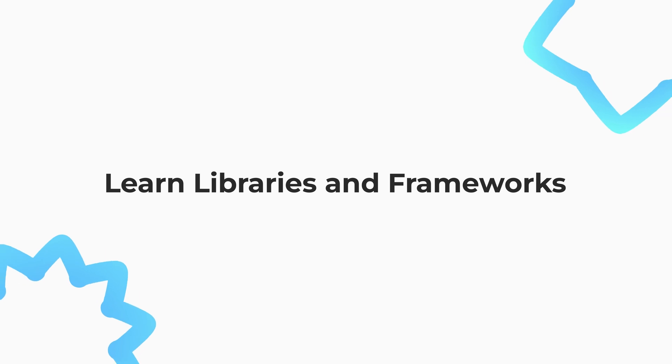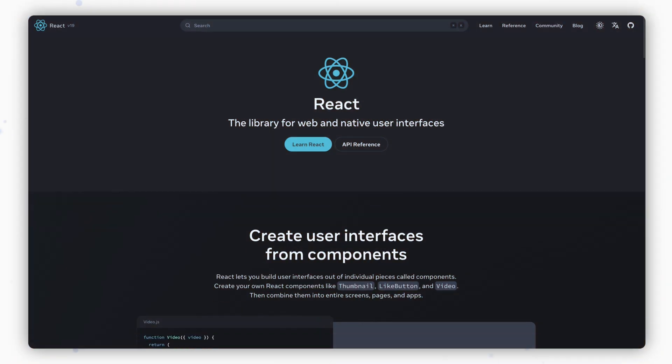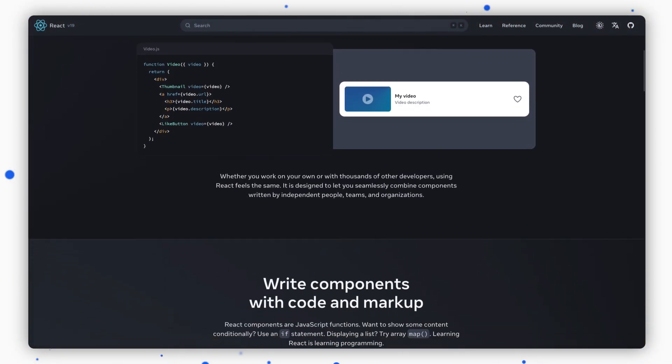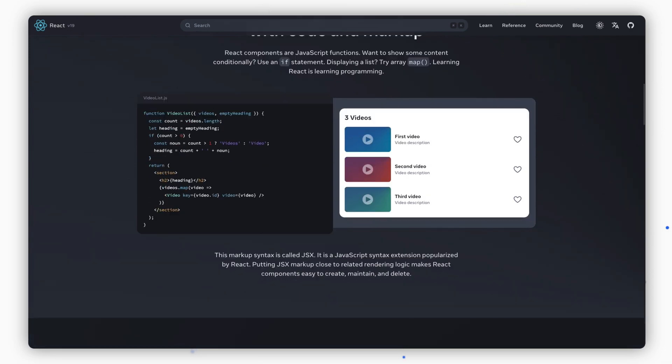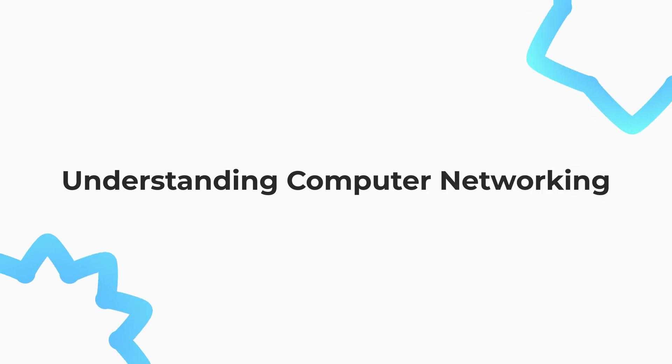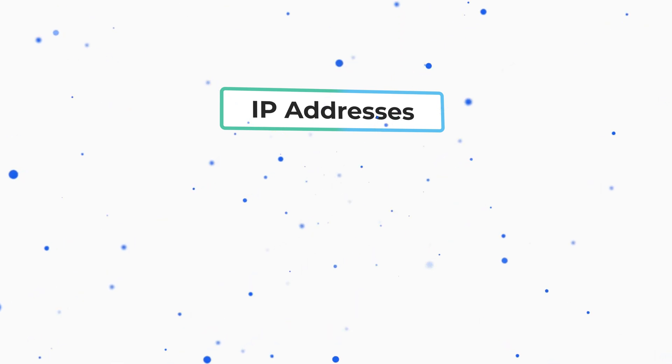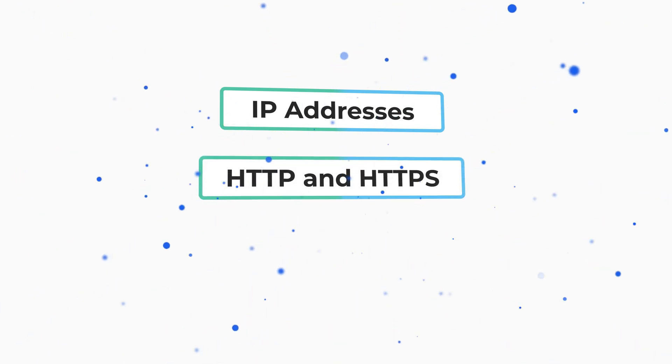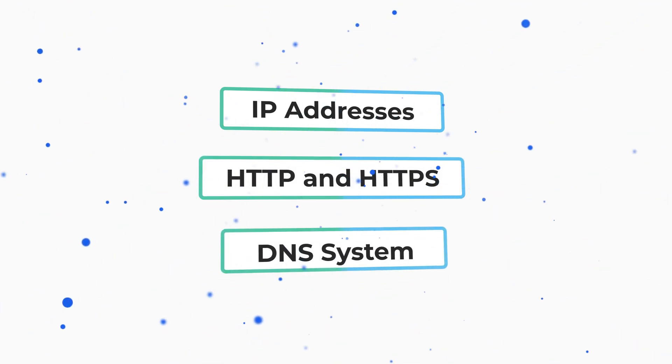Now it's time to start learning libraries and frameworks which are important for the industry. I would start with React.js, as it's the most popular and marketable skill — convert your previous projects into React and start applying to jobs right away. Next, learn a bit about computer networking: understand what happens when you type a URL in the browser, with key concepts including IP addresses, HTTP and HTTPS, and the DNS system.